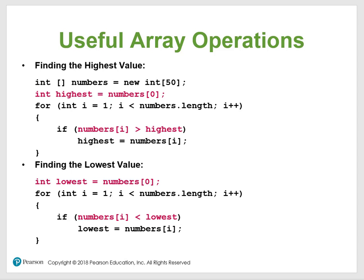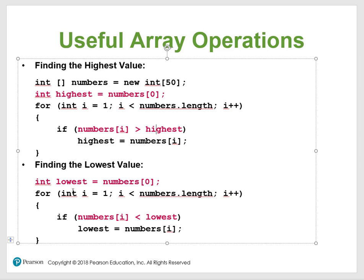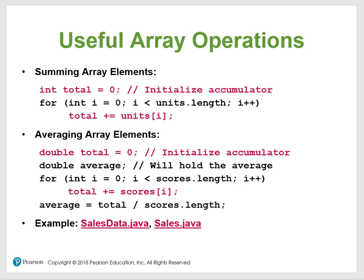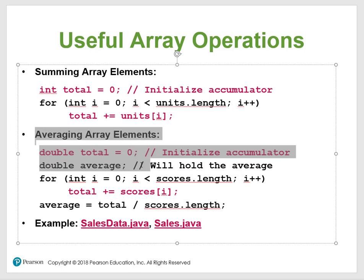Now let's look at useful array operations. For finding the highest value, you assign the highest variable to the first element, then loop through comparing each element — if one is greater, it becomes the new highest. Similarly for finding the lowest. Another useful operation is summing array elements: initialize total to zero as an accumulator, then add each array element to that accumulator as you iterate through.